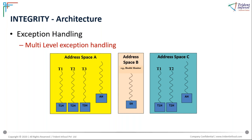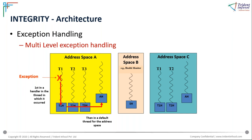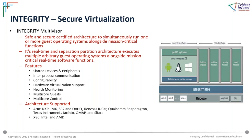INTEGRITY provides multi-level exception handling. If a task in an address space causes an exception, it can be handled at the task level, at the address space level (an address space handler is available by default), or at the system level via a health monitor address space with a system-level handler. This three-tier exception handling—task, address space, and system—ensures robust failure management.